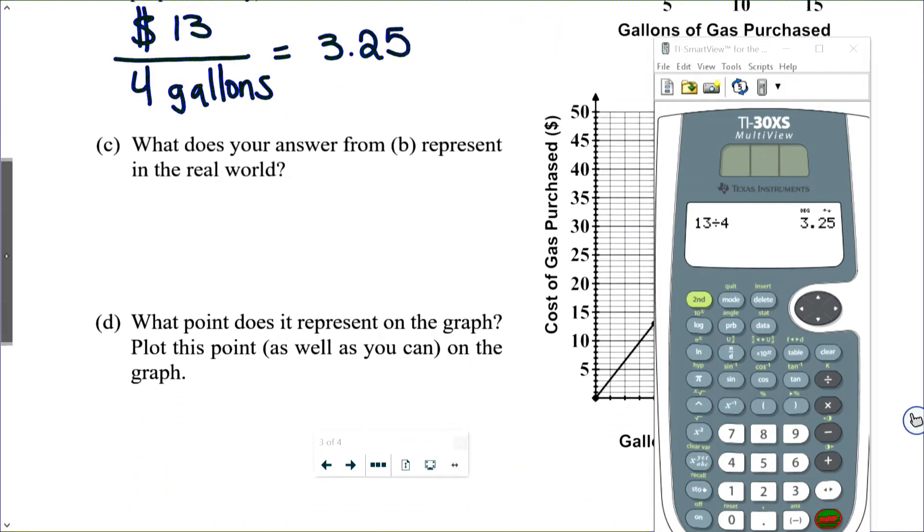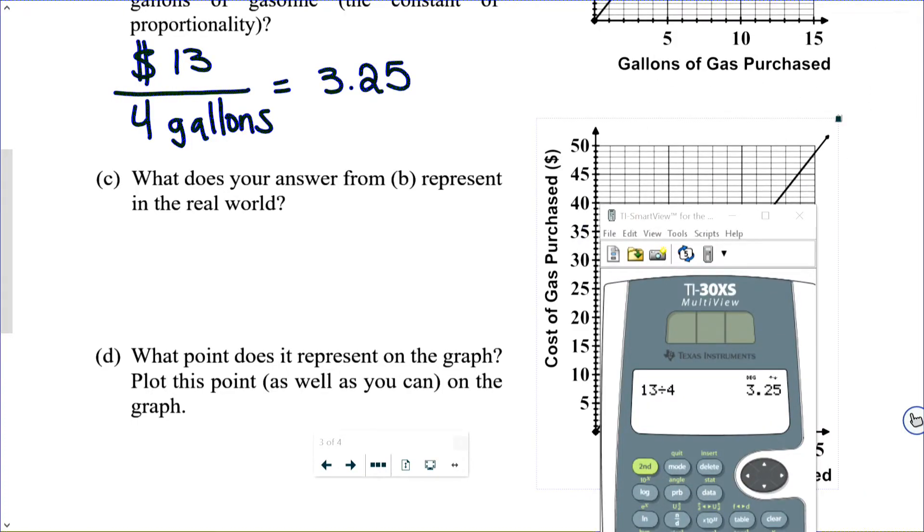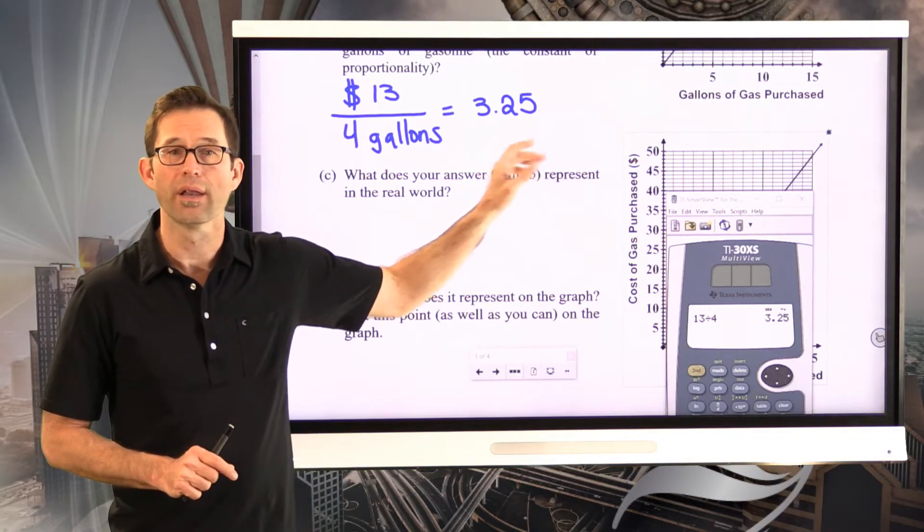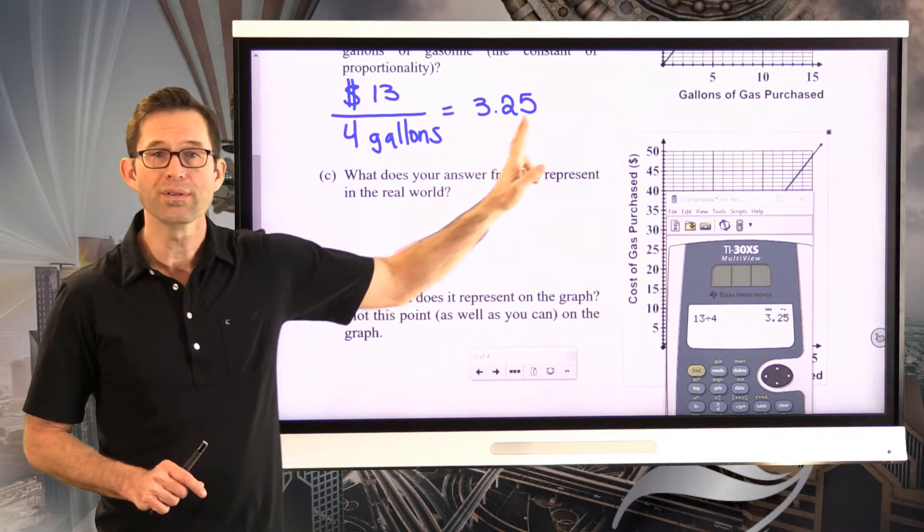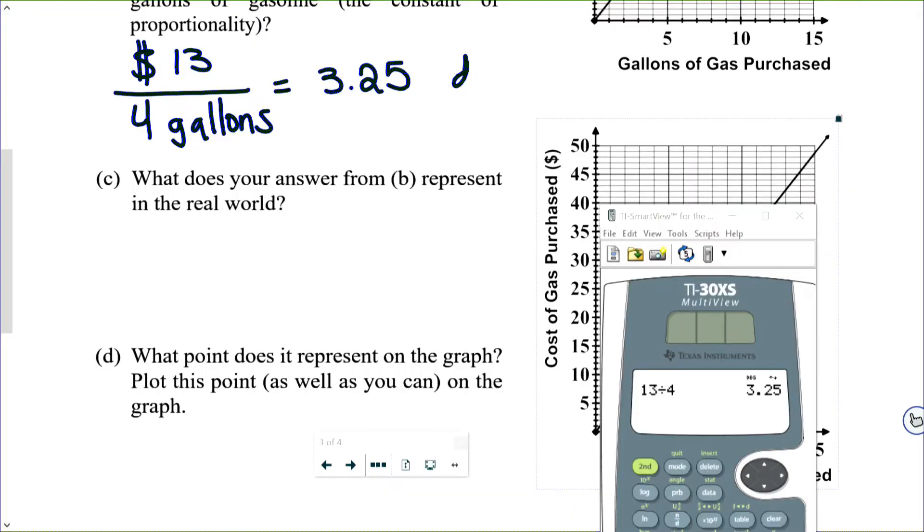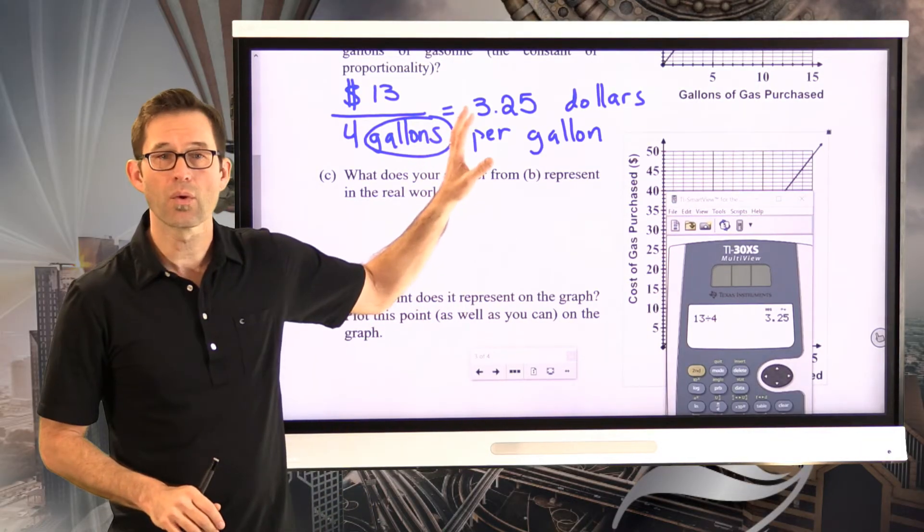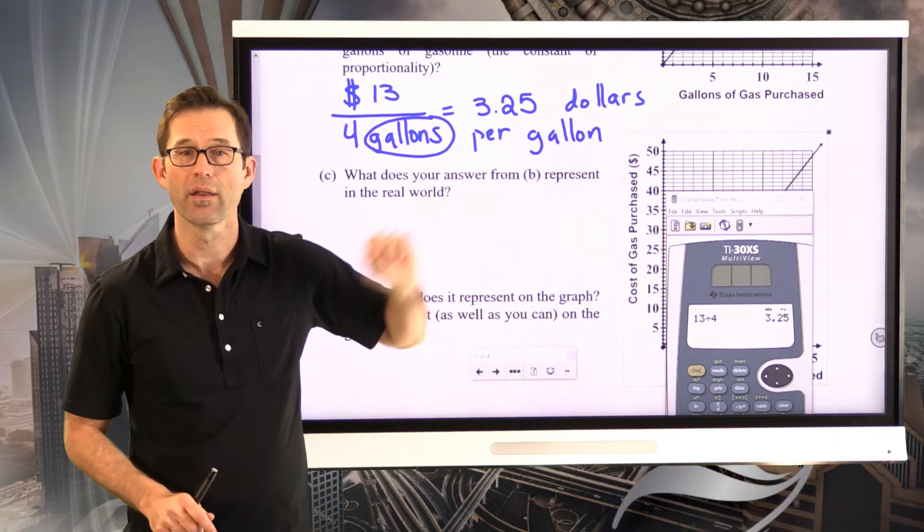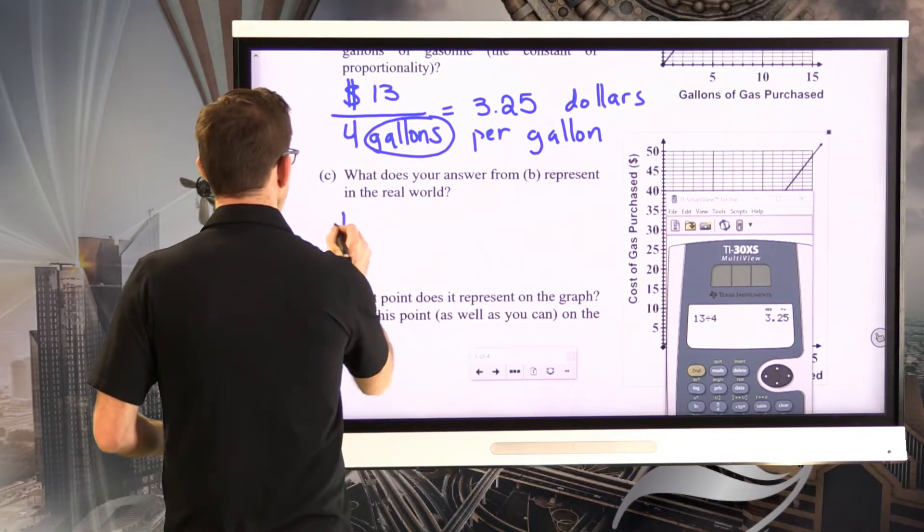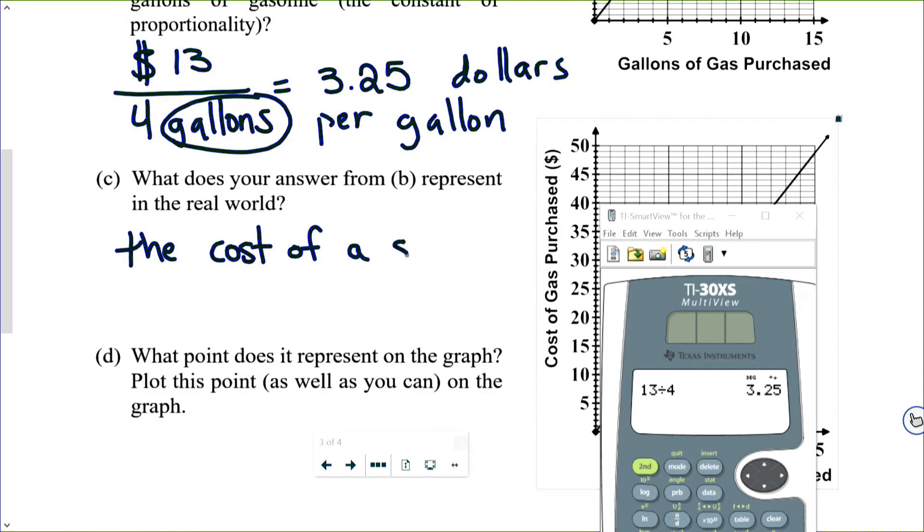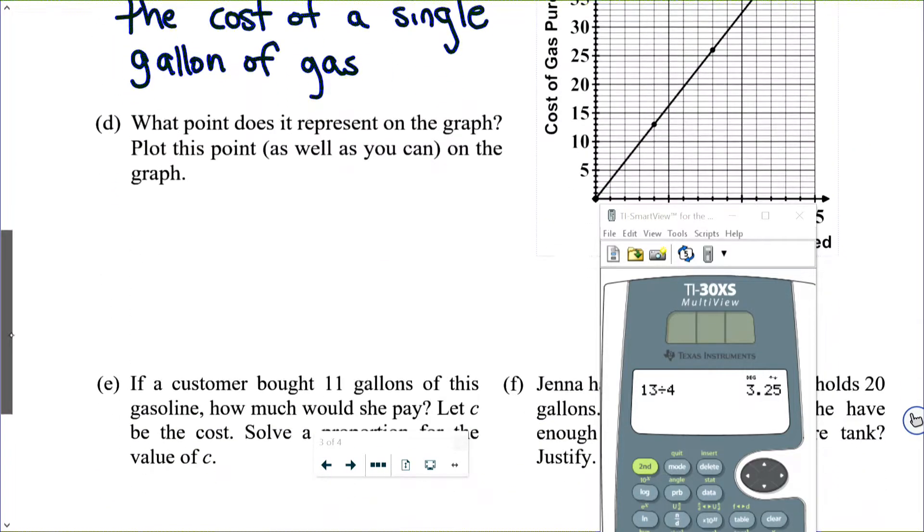Let's take a look at letter C. What does your answer from B represent in the real world? You can almost always interpret the constant of proportionality if you think about what its units are. The units of a ratio will always be the units of the numerator, which are dollars, per one unit of the denominator, gallons. What this ratio represents in the real world is the price of a single gallon of gasoline. $3.25 per gallon. So the cost of a single gallon of gas.